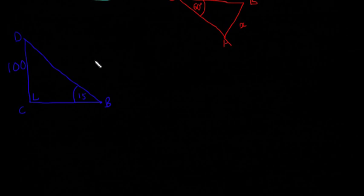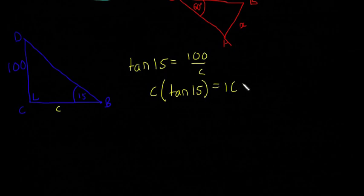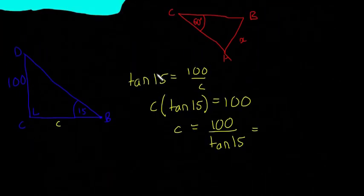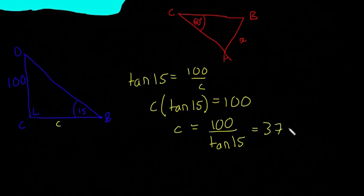So we just go through the rules. We can't use Pythagoras, but we can use sine, cos, or tan. So in this case, we're going to use tan because this is the side we want to get. We want to find the side C. So I'm going to say tan of 15 is equal to opposite over adjacent, which means it's going to be 100 over C. So that means C multiplied by tan of 15 is equal to 100. And we're going to divide both sides by tan of 15, and we get 100 divided by tan of 15.